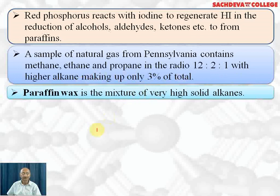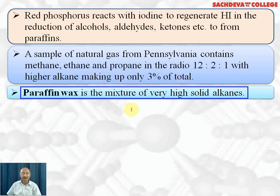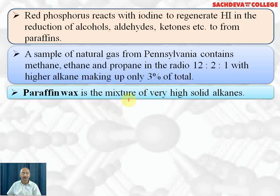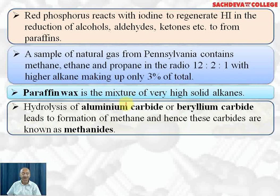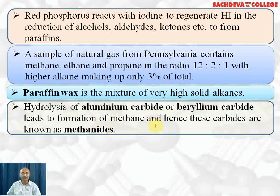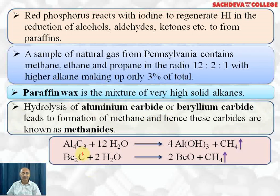Paraffin wax is the mixture of very high solid alkanes which is used for making candles. Hydrolysis of aluminium carbide or beryllium carbide leads to the formation of methane, and hence these carbides are known as methanides. Aluminium carbide formula is Al₄C₃ — aluminium is +3, so 3 comes here; carbide is 4, so 4 comes here.